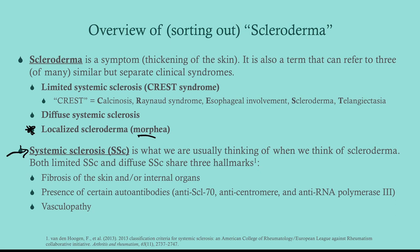There's limited and diffuse systemic sclerosis, and they share a few things in common. Number one: fibrosis of the skin and/or internal organs. Number two: presence of certain autoantibodies, which we'll cover. And number three: vasculopathy. Is this the same as vasculitis? No — vasculitis is inflammation of the blood vessels, whereas this is fibrosis of the blood vessels.